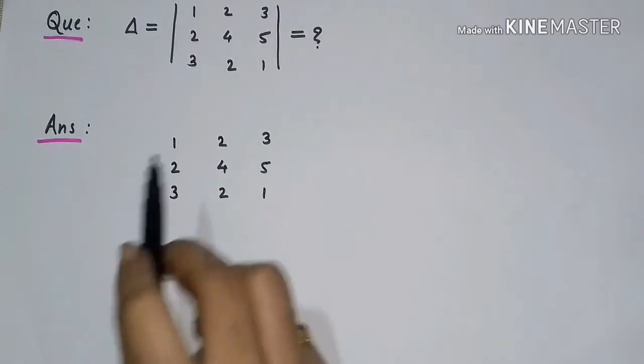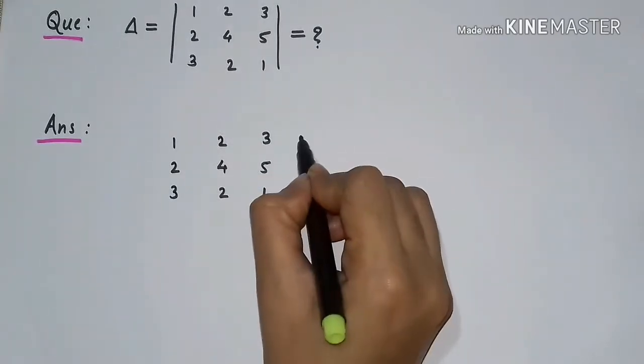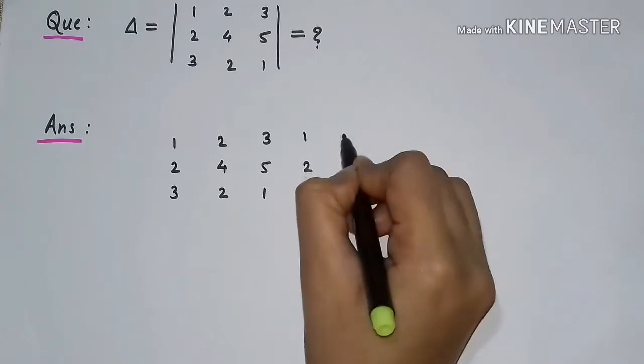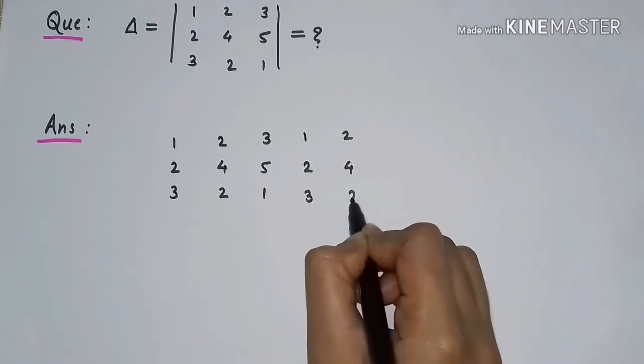Now we have to rewrite the first column and second column next to column C3. Here will be 1, 2, 3, and the second column 2, 4, 2.